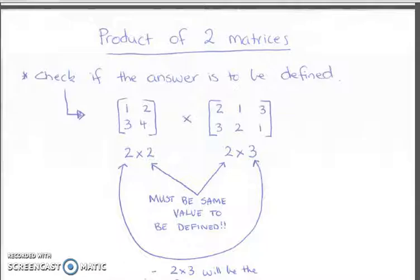Products, which is multiplication. Before you can multiply any two matrices, you first need to check to see if the answer is defined, meaning is it going to work? So we've got our order here. We've got a 2 by 2 matrix and a 2 by 3 matrix. The two inside values must be the same. That's the key. They must be the exact same value for it to be defined. Then if those are the same, the two outside numbers tell you what the new matrix is going to be, what size it's going to be. So in this case, the answer to this is going to be a 2 by 3 matrix.